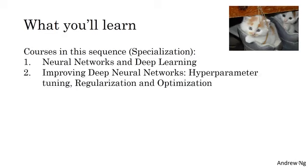Then in the second course, you learn about the practical aspects of deep learning. So you learn, now that you've built a neural network, how to actually get it to perform well. So you learn about hyperparameter tuning, regularization, how to diagnose bias and variance, and advanced optimization algorithms, like momentum, RMSprop, and the Adam optimization algorithm. Sometimes it seems like there's a lot of tuning, even some black magic, in how you build a neural network. So the second course, which is just three weeks, will demystify some of that black magic.